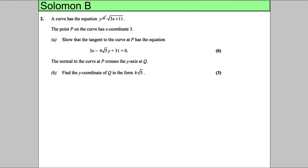We've got a curve with the equation y equals the square root of 3x plus 11. The point P on the curve has x-coordinate 3. Show that the tangent to the curve has the following equation. So we're supposed to show the tangent to the curve has this equation here. What we're going to need to do is use an equation of the form y minus y₁ equals m times x minus x₁, where x₁, y₁ is a point on the curve where the tangent touches it and m is the gradient. So we need to find those two things.